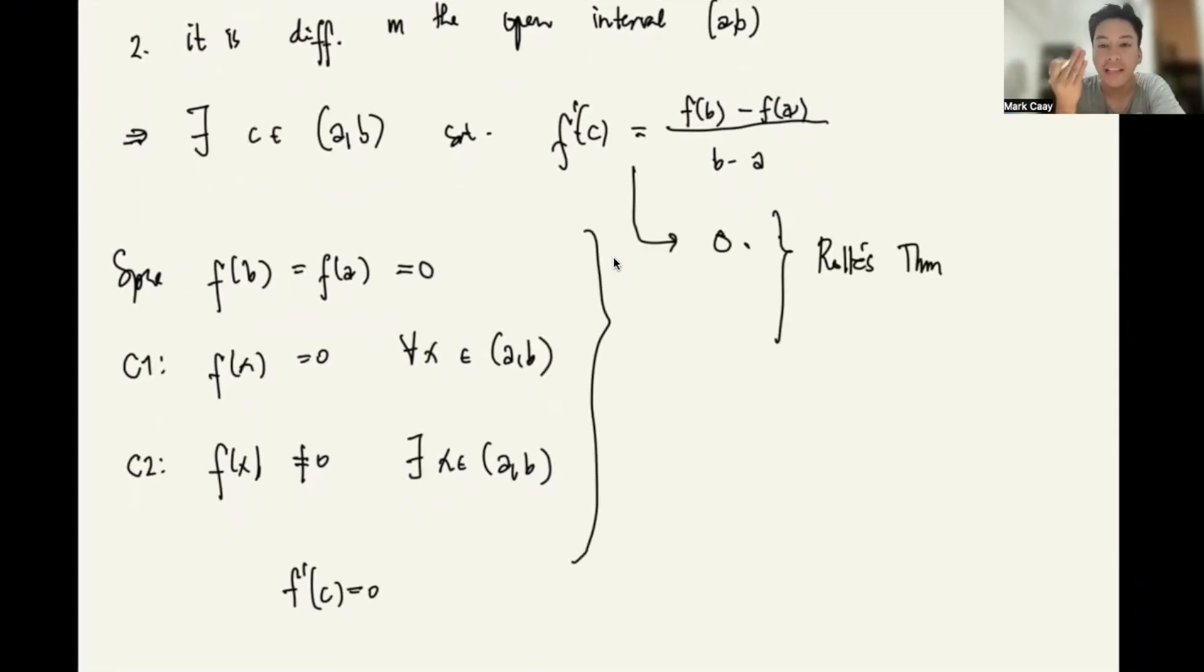However, if in the event that they are not equal, this one is not equal to this, then we call this the mean value theorem. Which means that Rolle's theorem is actually a special case for the mean value theorem. So that means the mean value theorem generalizes the cases for this Rolle's theorem.